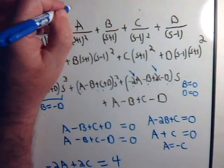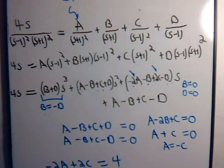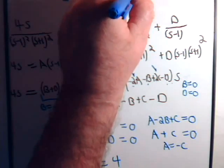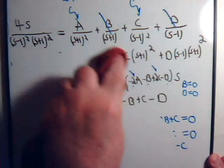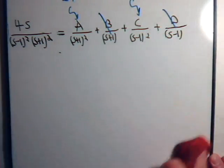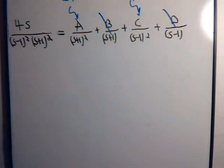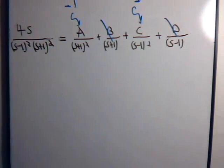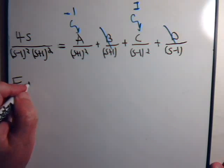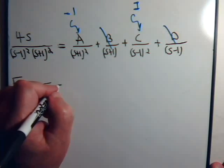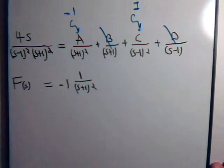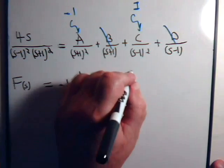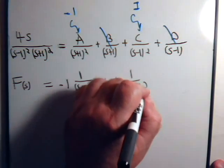So going back to our partial fractions expression, A is minus one, C is plus one, and B and D are both zero. So F of s equals minus one times one over s plus one squared, plus one times one over s minus one squared.